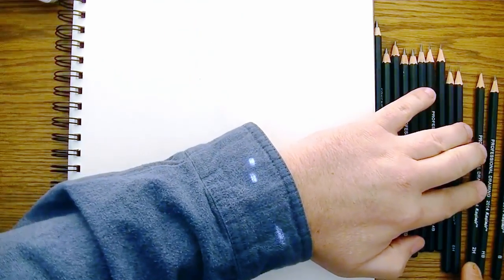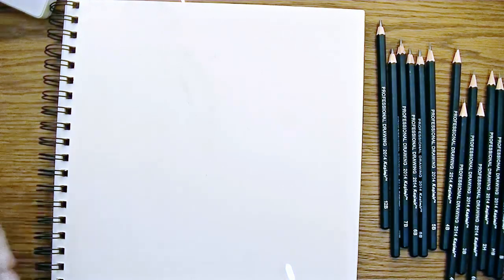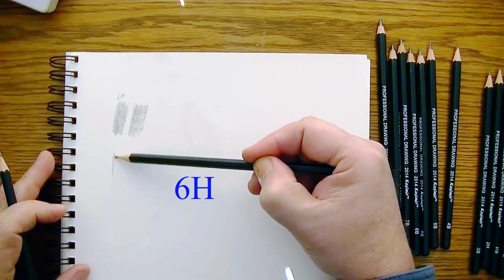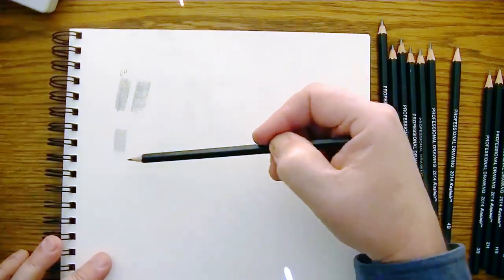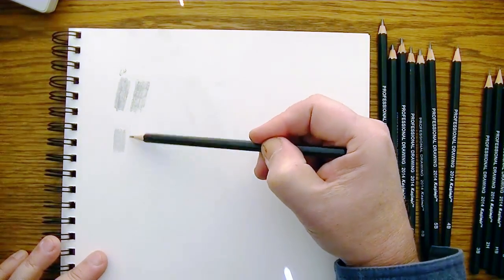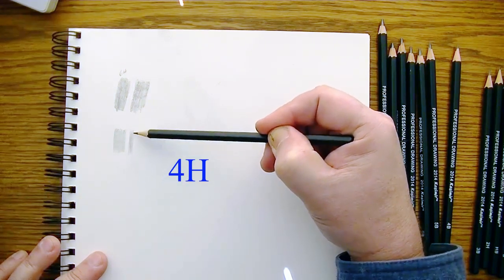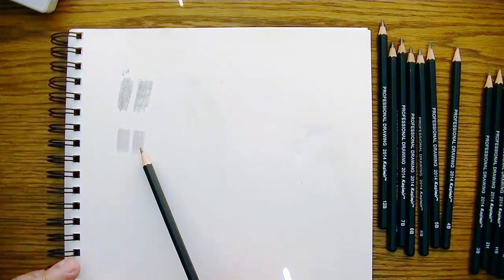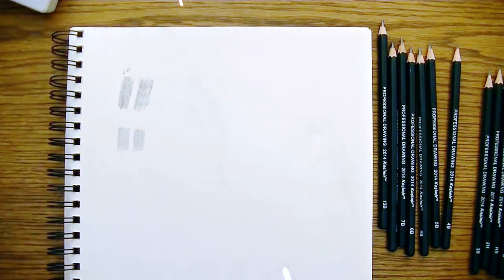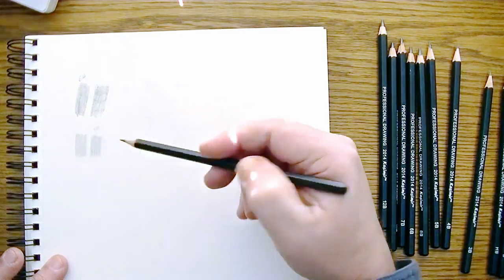I'm going to turn these pencils around here so I can at least see what values they are. 6H looks like the hardest pencil I have. Let's make sure, yep, 6H. All right, so that would be the 6H right there. Now let's see what the 4H can do using just the top-down stroke. Yeah, slightly darker, it's not a whole big jump there. Now we go to the 2H.